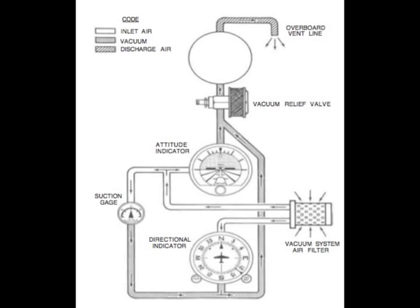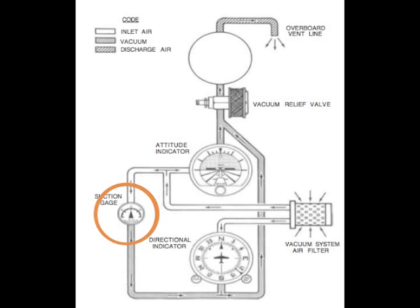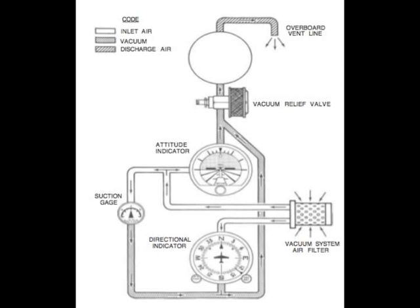That's great, but we can't see these things in the cockpit. So we need a way to monitor the health of the system. That's where the suction gauge comes into place. All the suction gauge is doing is measuring the pressure differential created by that pump. For the 150, the normal operating range is 4.6 to 5.4. So all we need to do as pilots is make sure that it's in the green, or in other words, in the normal operating range.